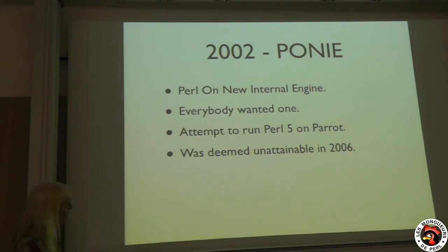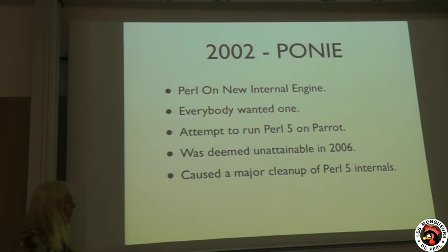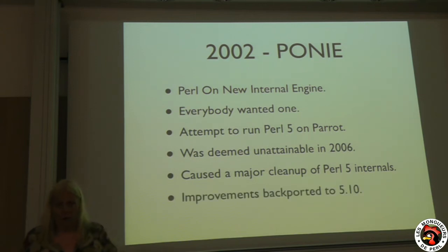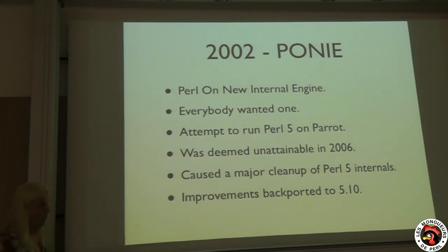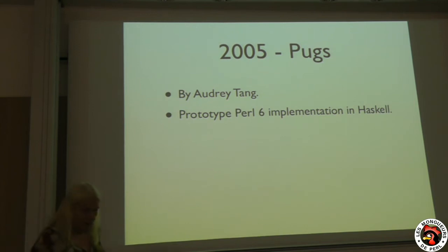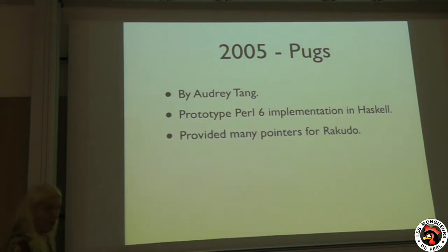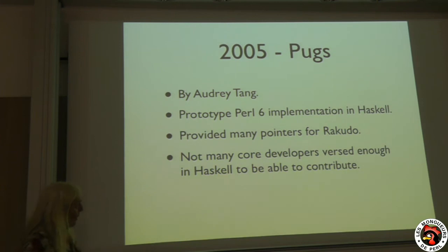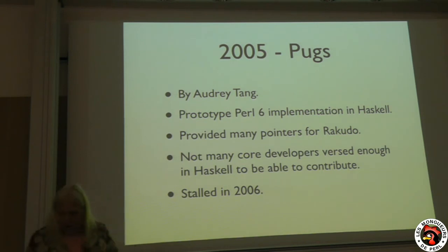And in 2002 we had Ponie. Ponie was built on a new internal engine, basically because everybody wanted one. It was an attempt to actually run Perl 5 on Parrot, and it ran for about 4 years. It was actually deemed unattainable. But a nice side effect of it was that it caused a major refactoring of Perl 5 internals, and actually all of those improvements were backported to Perl 5. So it was a project that did not work out, but it had some good side effects.